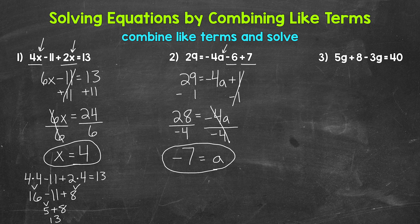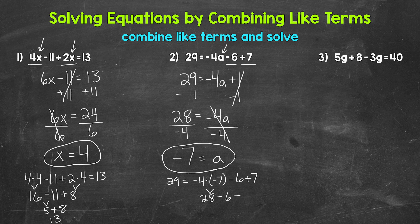Let's check by plugging in negative seven for a. So 29 equals negative four times negative seven minus six plus seven. Multiplying first: negative four times negative seven — a negative times a negative equals a positive — gives us 28. So we have 28 minus six plus seven. 28 minus six is 22, and 22 plus seven is 29. We are correct — a equals negative seven.